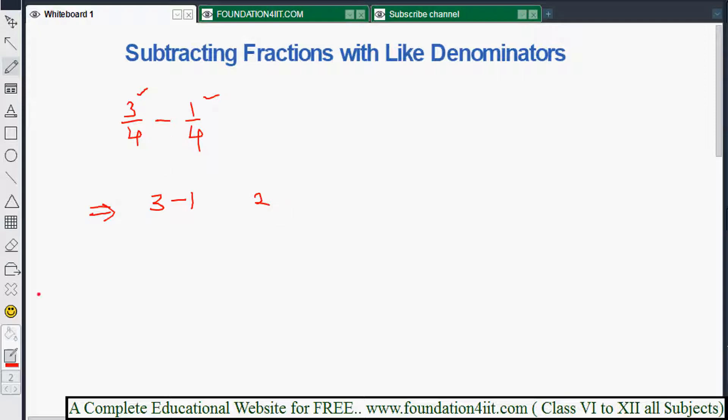3 minus 1 is 2, so 2 by 4 is the answer. Now you can simplify this. You can cancel because 2 and 4 are in the 2 table, so the answer is 1 by 2.